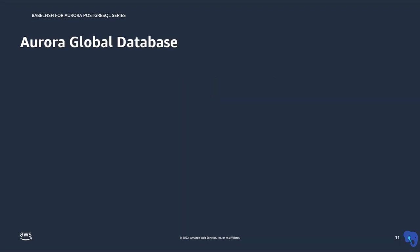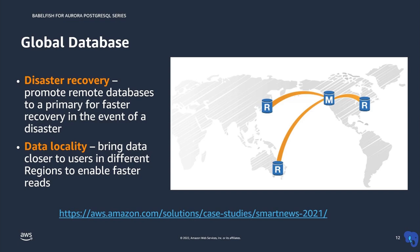Let's see how you can achieve cross-region DR using the global database. You can achieve this with a single click of a button. The global database creates a copy of the storage at the secondary region with continuous replication at the storage level with less than one second latency. You can also configure the RPO time limit using the global database to meet your DR compliance, and create a reader instance at the secondary region for applications that need low latency read transactions. In case of any disaster at the primary region, you can fail over to the secondary region and point your applications back to it.